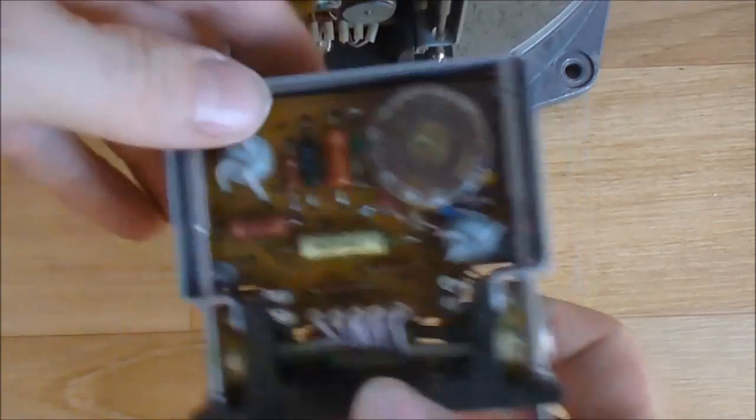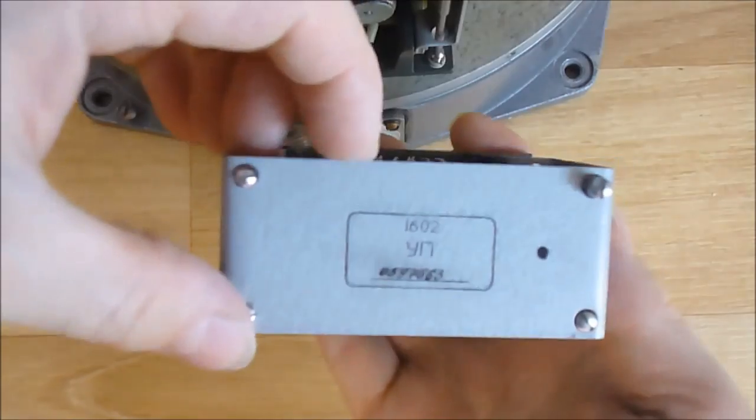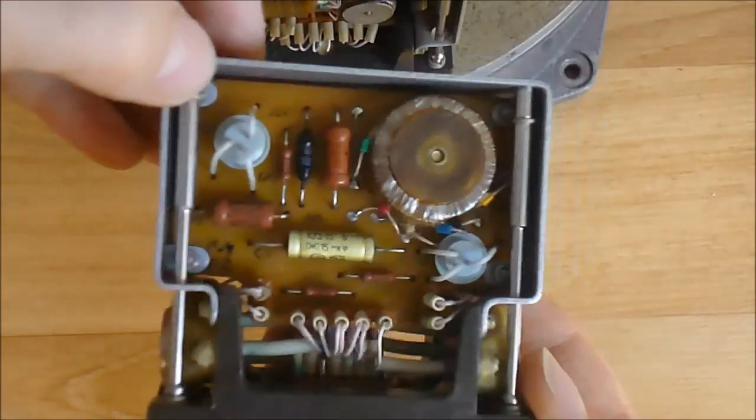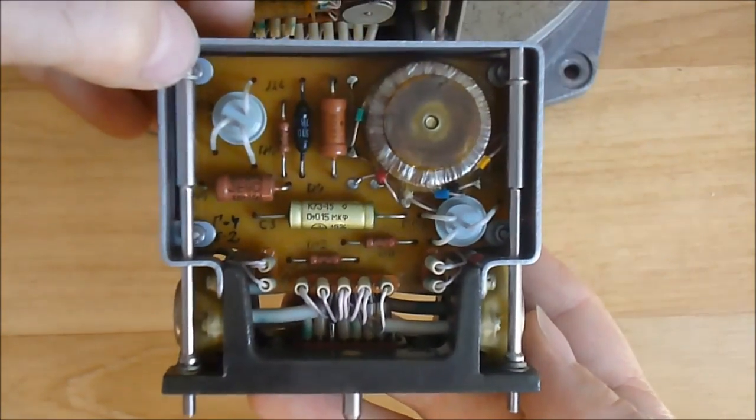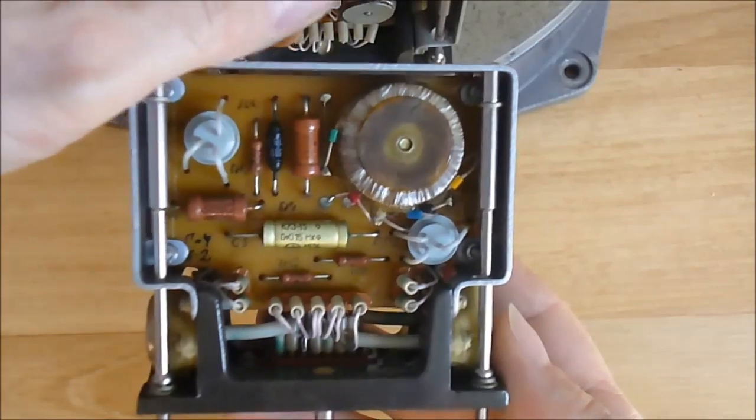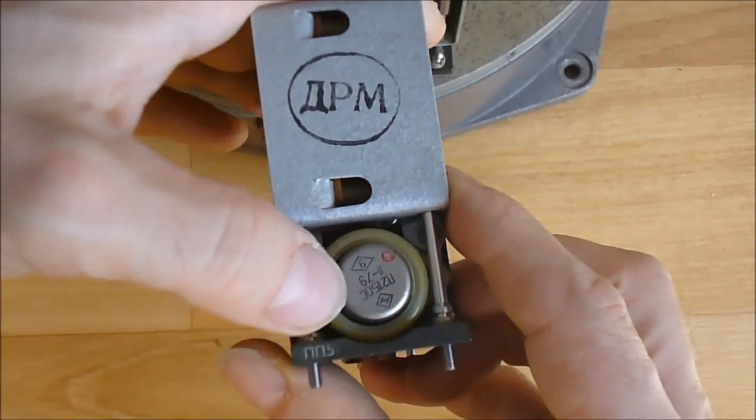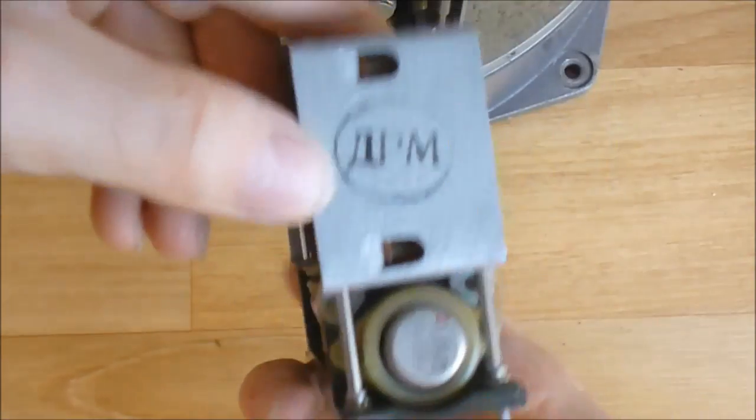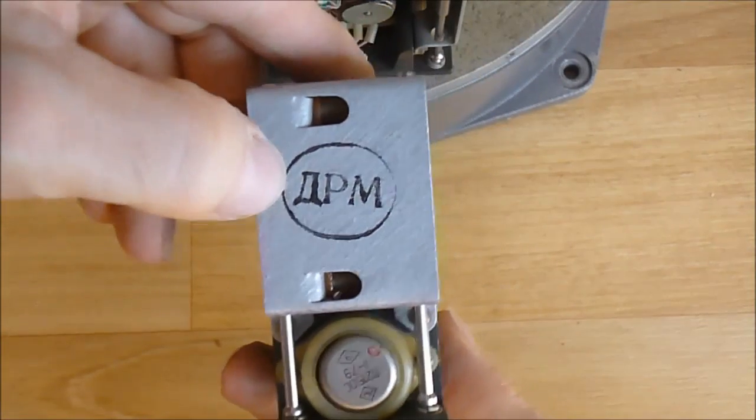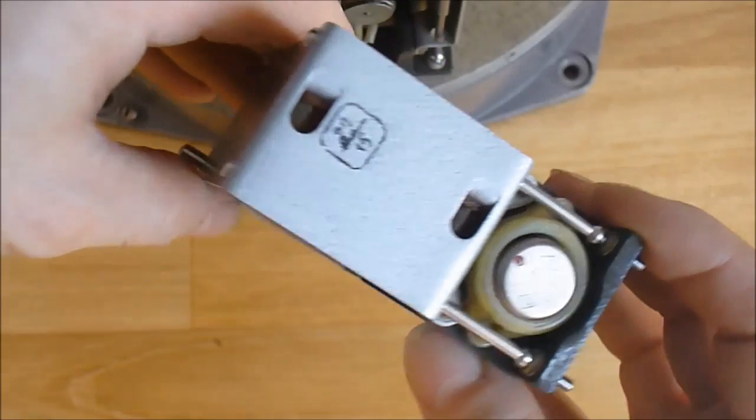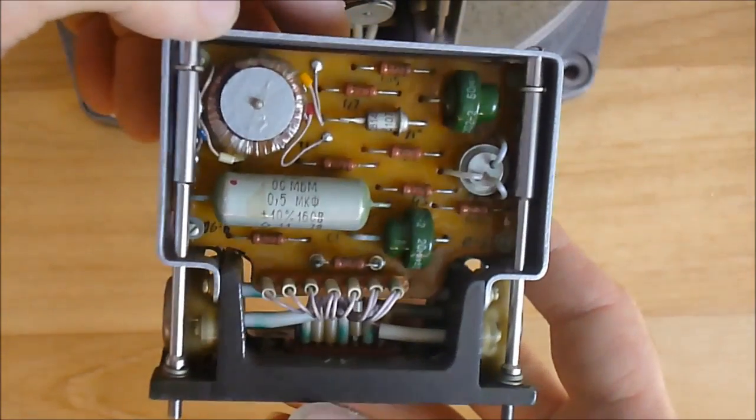So the other module. Here is the model number. So it is almost the same thing. Toroidal transformer, dead bug transistors. Power transistors on the side. Some quality stamp here. Or something. And the back side.